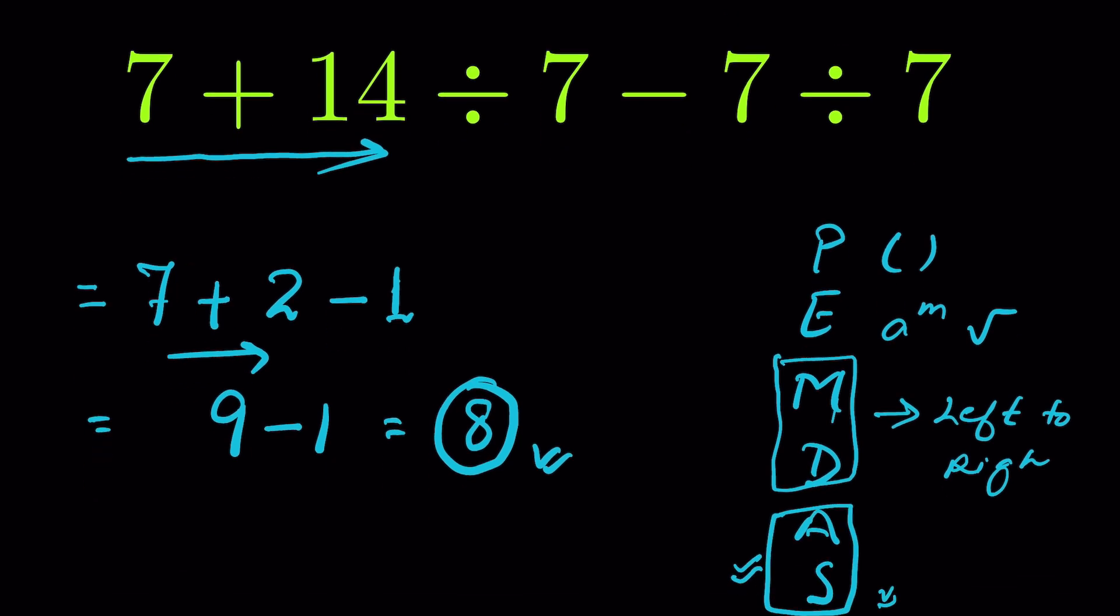However, for addition and subtraction, even if you do this subtraction first, you will get the same answer: 7, 2 minus 1 is 1, so 7 plus 1 is 8.